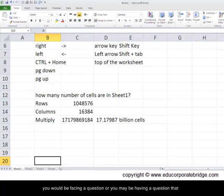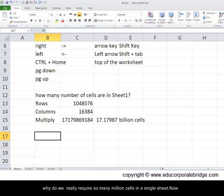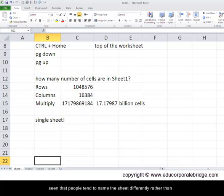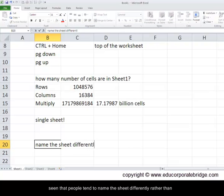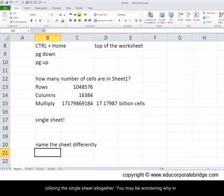Now I am sure you would be facing a question or you may be having a question that why do we really require so many billion cells in a single sheet? Now I guess it's a very difficult question to answer. Larger corporates I guess may be utilizing majority of the cell inputs here. However for individual usage or in most corporate usage I have seen that people tend to name the sheet differently rather than utilizing a single sheet altogether.